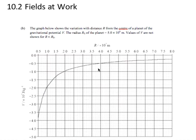The graph below shows the variation with distance r from the center of a planet of the gravitational potential V. The radius of the planet is 5 times 10 to the 6th meters, that would be 0.5 times 10 to the 7th meters. So the radius of the planet starts at the beginning of the graph. The graph doesn't start from 0.